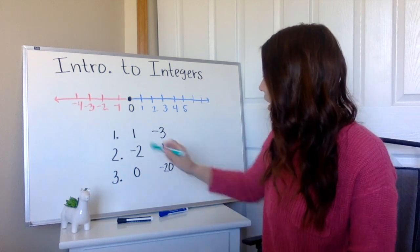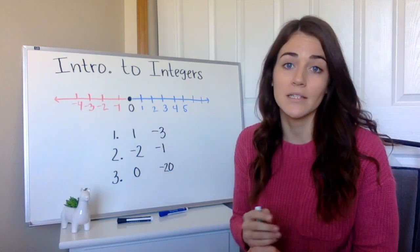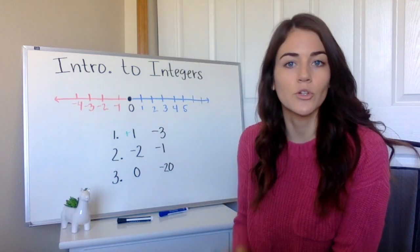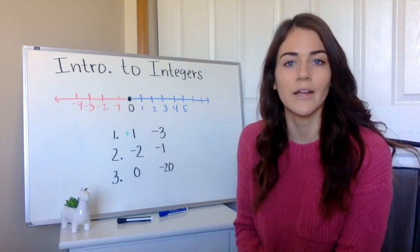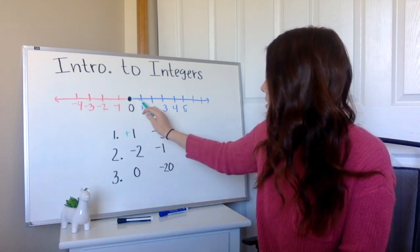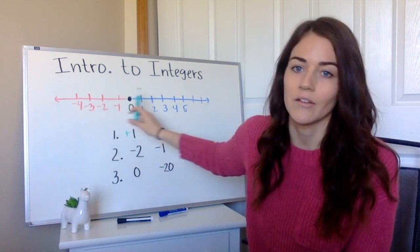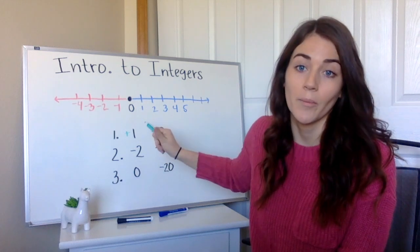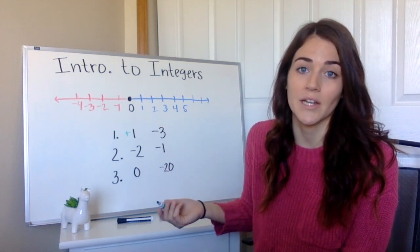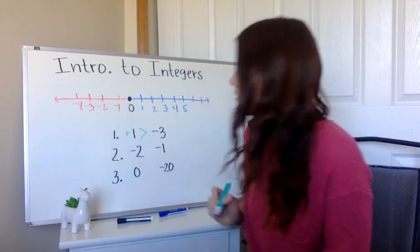So our first one, we have a positive one and a negative three. And how I knew that was positive is if there's not a symbol in front of it, you can go ahead and automatically assume it's positive. But if we look at this on the number line, we're going to see that any positive number over here is going to be bigger than any negative number. So anytime you see comparing a positive and negative, you always know the positive is going to be bigger. So I'm going to put one is greater than negative three.